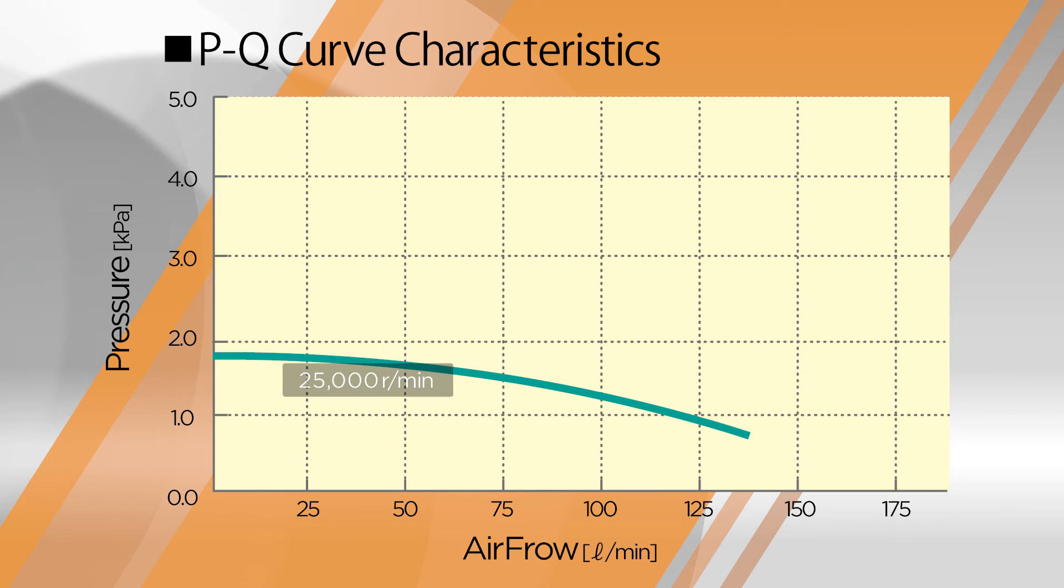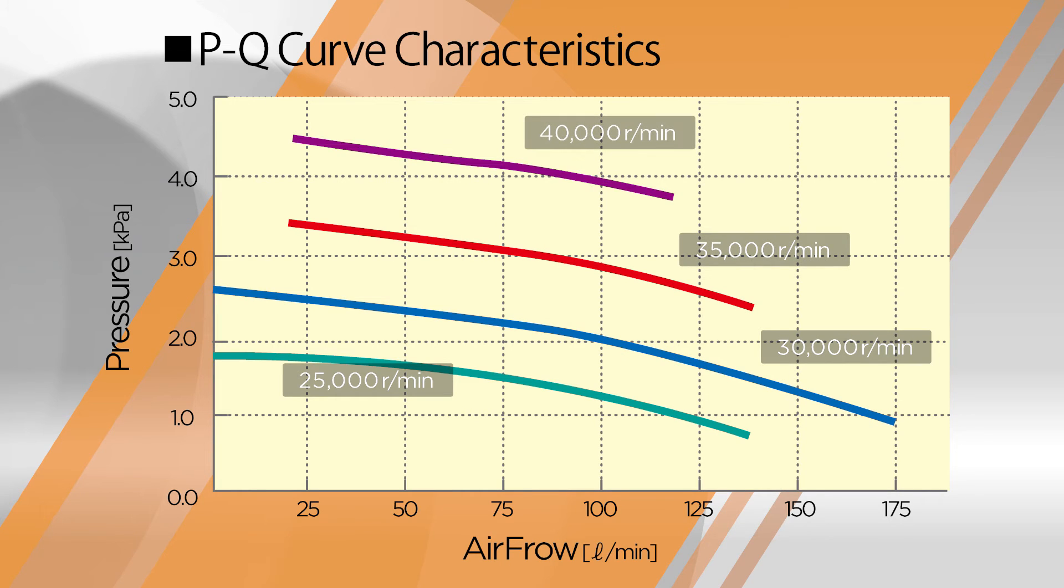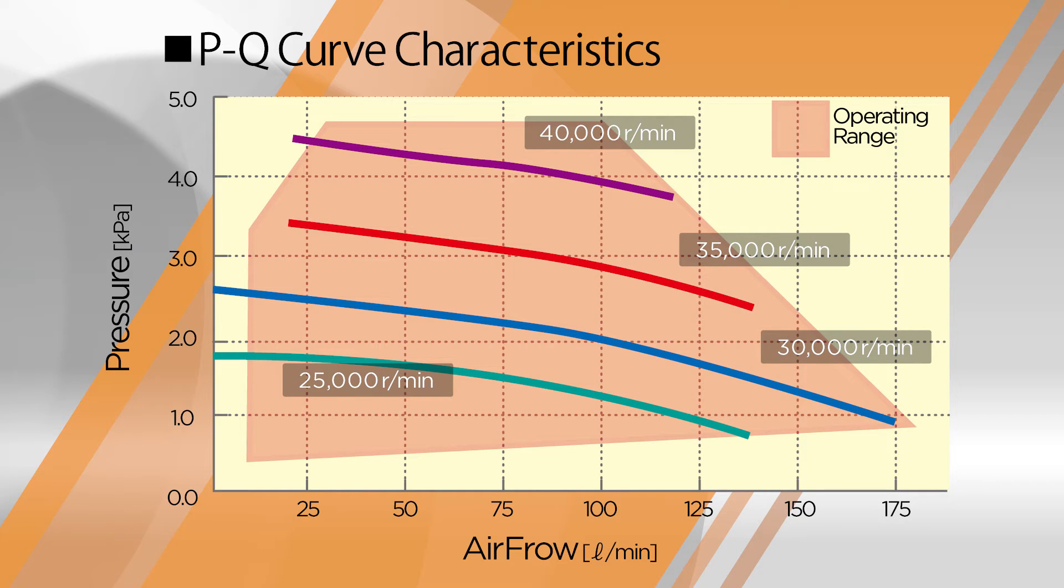This is a graph of the P-Q curve, showing the relationship between static pressure and air flow. As you can see, the product has a very high static pressure range within the operating range.